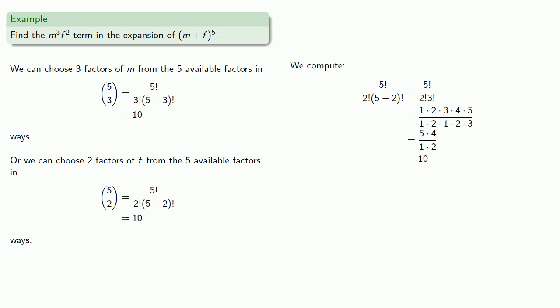Now we have to decide which of these two answers is the correct answer. Well, actually they're the same answer. And since they're the same, we can use either one. So there are 10 ways to get a term that includes 3 factors of m and 2 factors of f. And so this term will be 10 m cubed f squared.